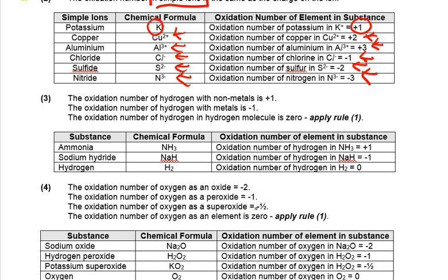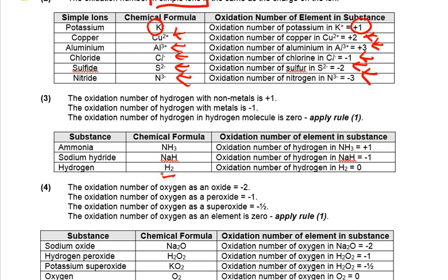Another rule applies to hydrogen. If hydrogen reacts with a non-metal — for example, nitrogen in NH₃ — it has an oxidation number of plus 1. We need to know these numbers because we use them as constants to calculate the oxidation number of unknown substances. In NaH, hydrogen has reacted with a metal, so it takes a value of negative 1. By itself as an element, it is 0.